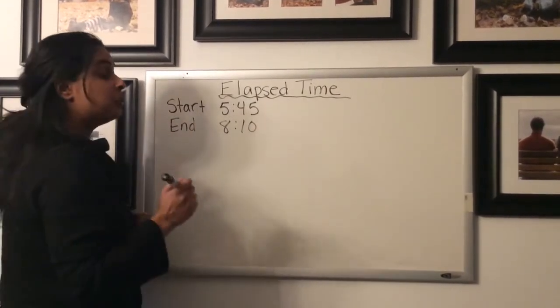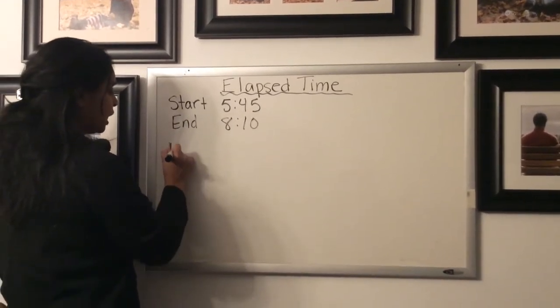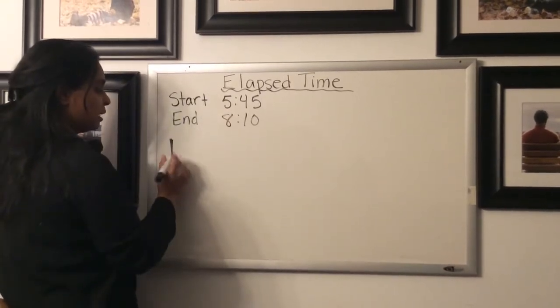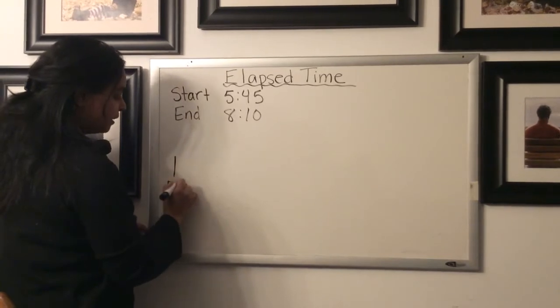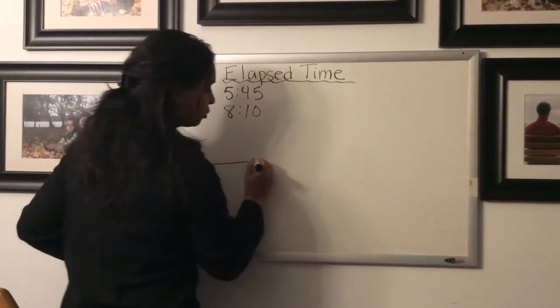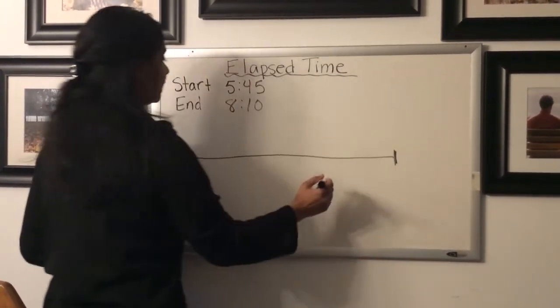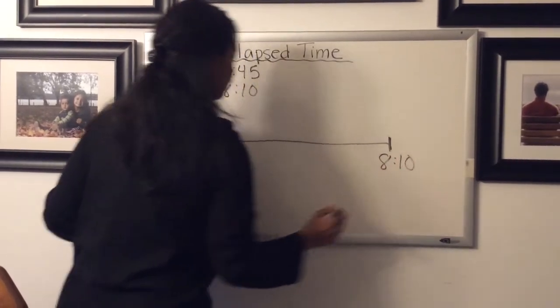Now the strategy you're going to use is drawing a timeline to figure this out. So you have a start time that you're going to have on this side of your timeline. So I'm going to go ahead and put the start time in. I'm going to move this down a bit. 5:45. And then I'm going to draw my timeline. So I've got enough room to count up to the end time, which is 8:10.